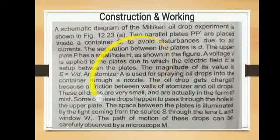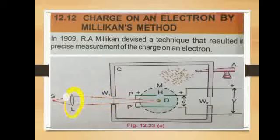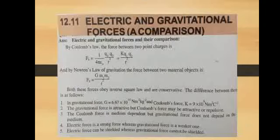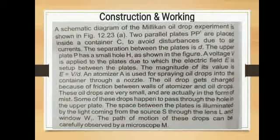This is the complete construction and working. In construction, you have an atomizer, two horizontal plates — P-plus (positively charged) and P-negative (negatively charged) — window W1 through which X-rays enter, a lens to focus rays on a single droplet, window W2, and distance D between the plates. C is the rectangular chamber, M is the microscope, and capital H is the hole in the upper plate.